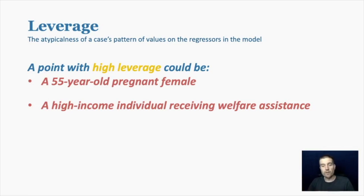So some examples of some high leverage points could be a 55 year old pregnant female. So a pregnant female probably isn't all that weird in your data. And depending on your data set, a 55 year old is probably not all that weird either. But the combination of the two is rare. So it's going to have high leverage.